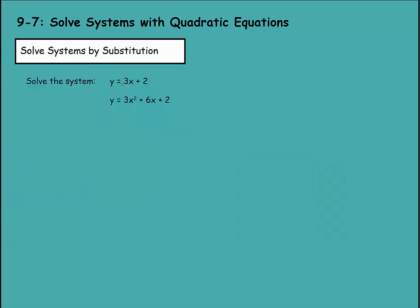It tells us to solve the system y equals 3x plus 2, and then y equals 3x squared plus 6x plus 2. Here you notice we're solving these by substitution. If y equals this and y equals that, I know that this equals y. So I can plug this in here. 3x plus 2 equals 3x squared plus 6x plus 2.